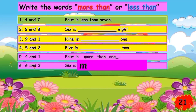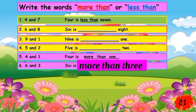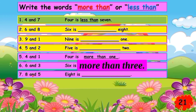Number six: six and three. Is it more than or less than? That's right, it is more than three. So you're going to write the word 'more than,' and spell 'three' — T-H-R-E-E.